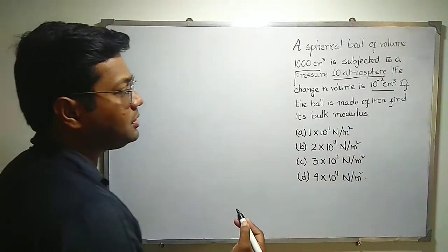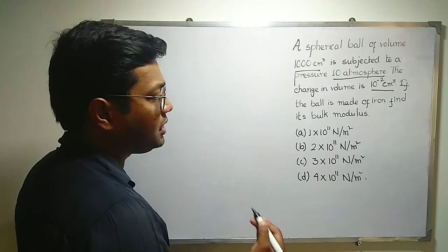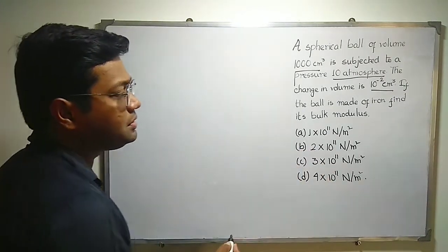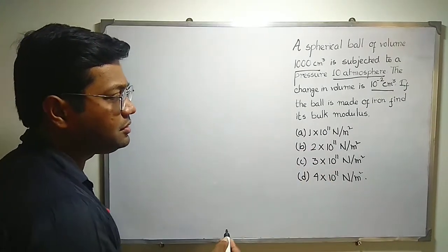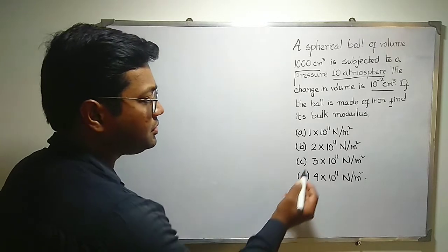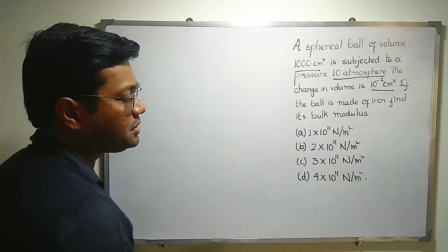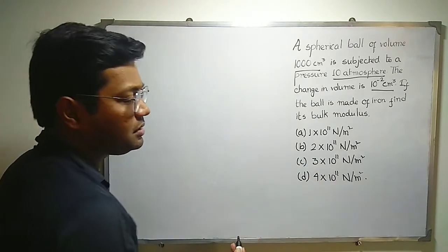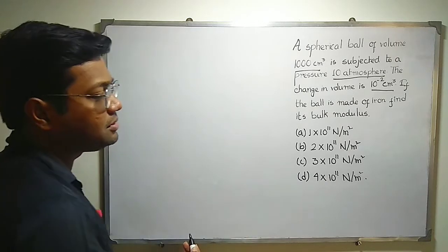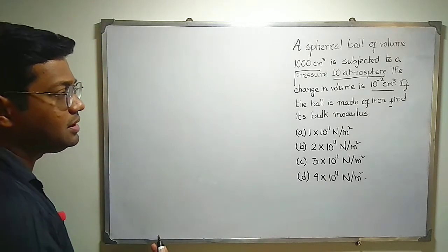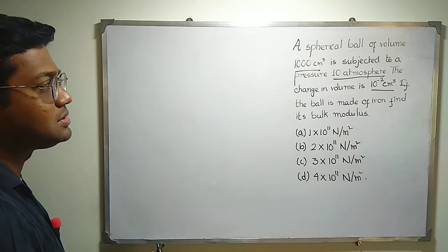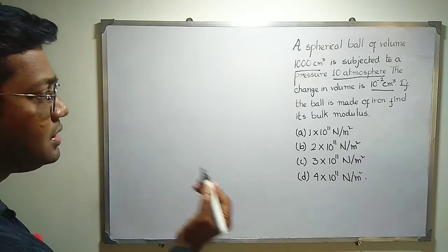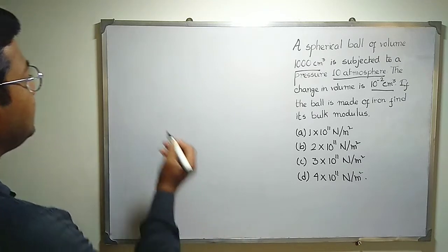That means we have to find the bulk modulus of the material iron. The options are 1×10¹¹ N/m², 2×10¹¹ N/m², 3×10¹¹ N/m², and 4×10¹¹ N/m². So let us first write down the data that is given.